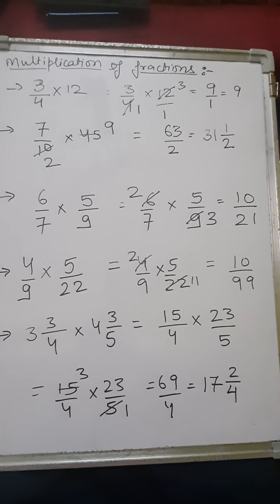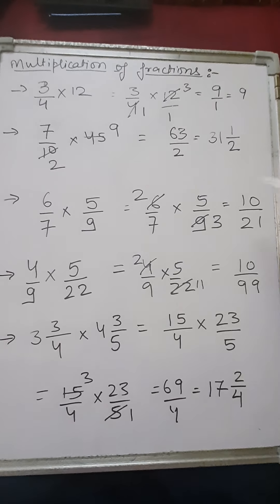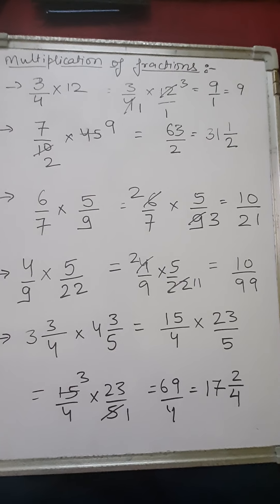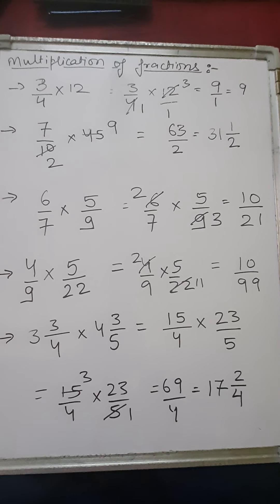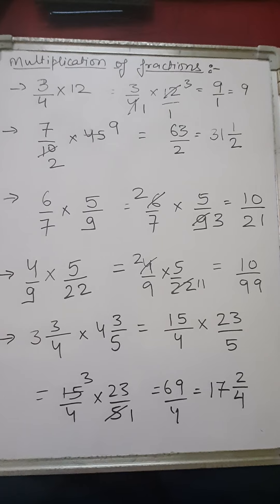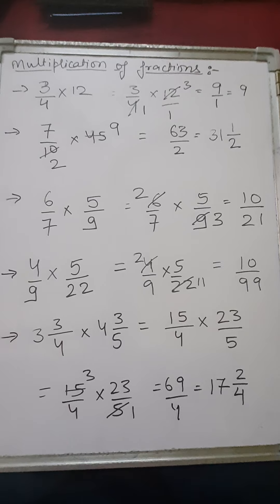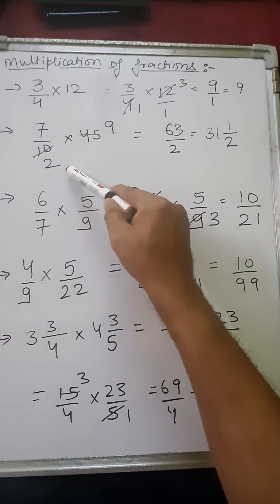Same as in this question, it is written 7 upon 10 into 45. Now we know that 10 and 45 can both be cancelled by 5, so we can cancel both by 5. By 5, 2 to 10 and 5 nines are 45.